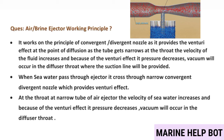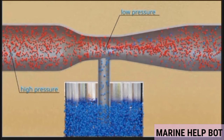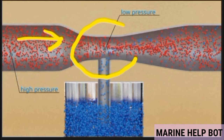When sea water passes through the ejector, at the narrow throat the velocity of sea water increases, causing a pressure drop — this is known as the venturi effect. In this area, the pressure drop creates a vacuum, and due to this vacuum, the brine or air is sucked in and moves out mixing with sea water.